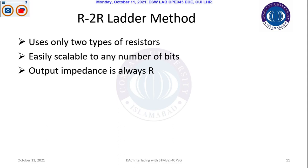If you want to increase the number of bits, you will increase the R-2R value. If you have seen this circuit, it is a ladder, so you can expand it comparatively easily. If you want to increase the number of bits, you increase the R-2R configuration. The output impedance is always R. So comparatively, in terms of benefits, it is a more viable solution.